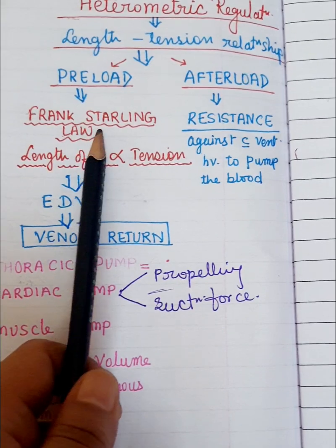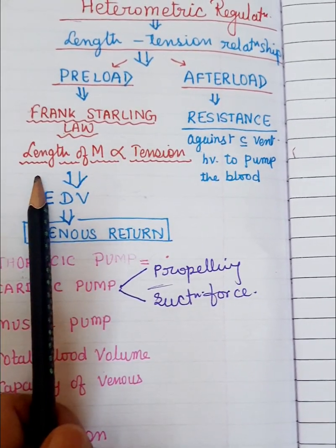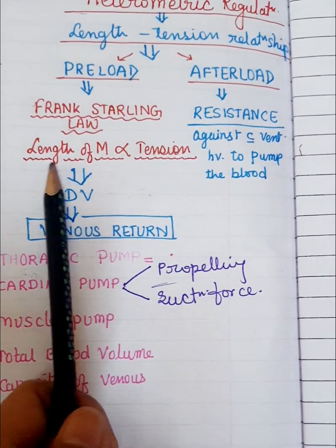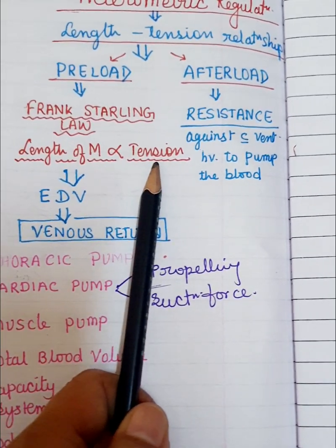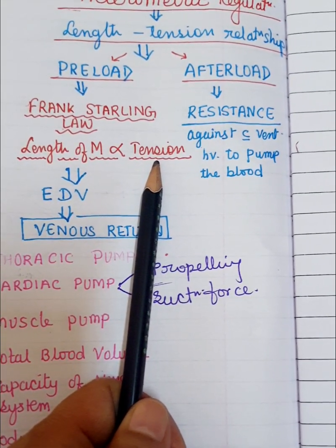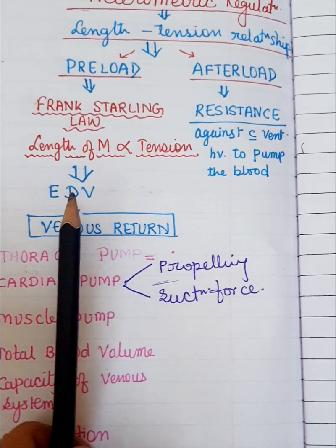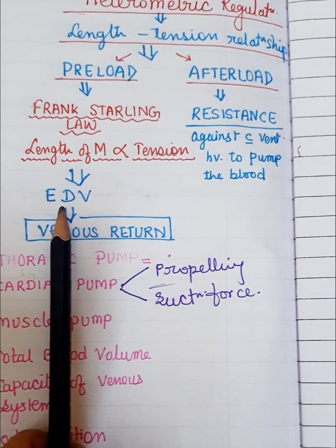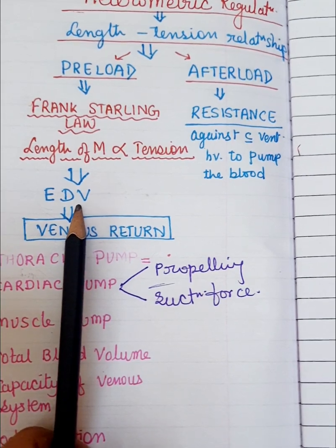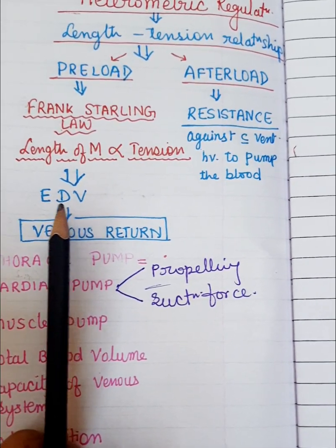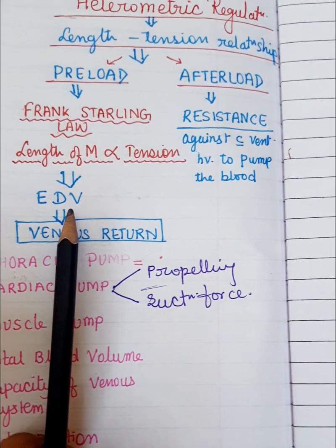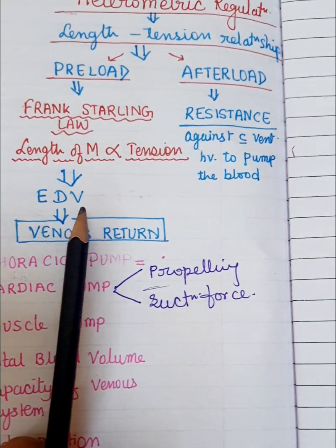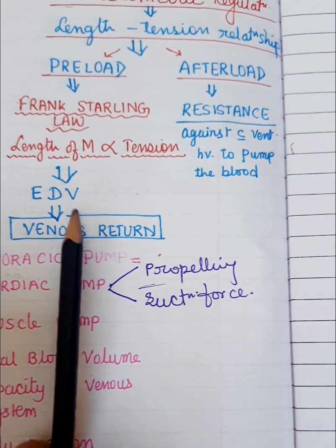This law is known as the Frank-Starling law, which shows the relationship between the length of the myocardium and the tension developed within it. The length of the myocardium is directly proportional to the development of tension. The length of the myocardium depends on the end-diastolic volume, which is the volume of blood present within the ventricle at the end of diastole — at the end of relaxation of the ventricle.